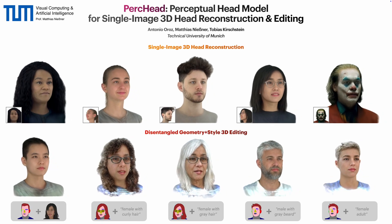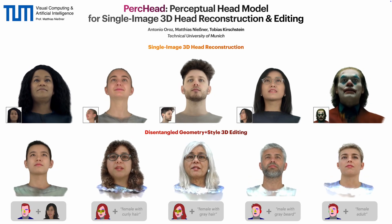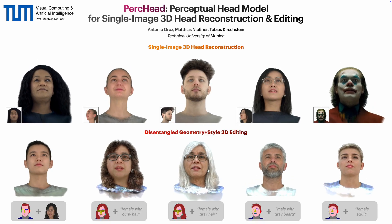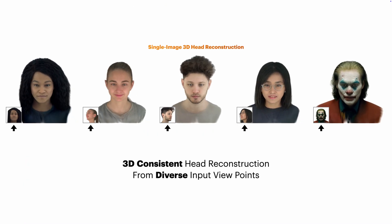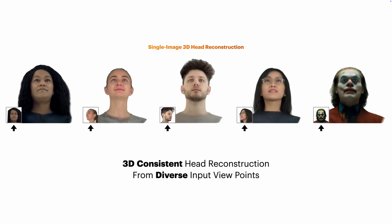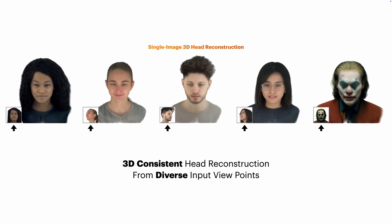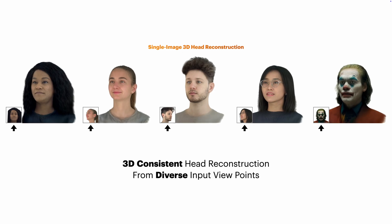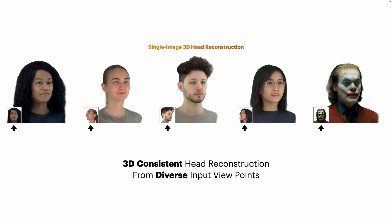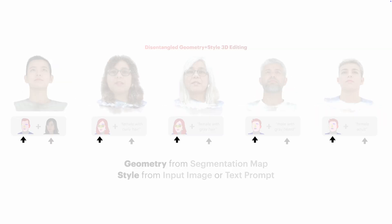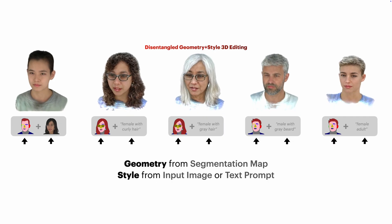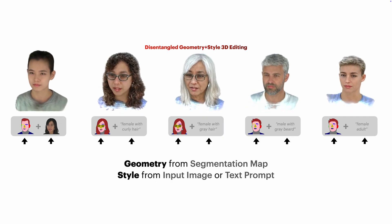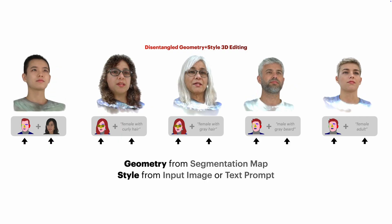We present PERCHEAD, a perceptual head model designed for single-image 3D head reconstruction and editing. In this work, we introduce a unified method that addresses two fundamental tasks. First, we reconstruct a high-quality 3D head from a single 2D image. Second, we enable flexible and semantically controlled 3D editing, using segmentation maps for geometry and either reference images or text for style guidance.